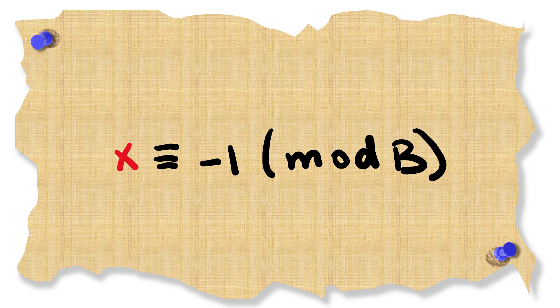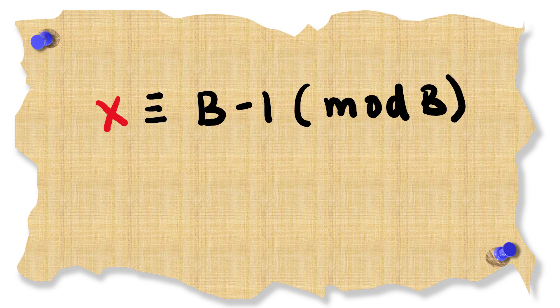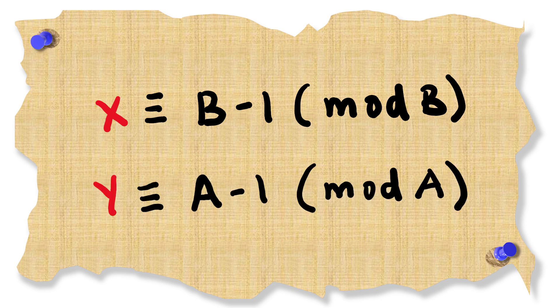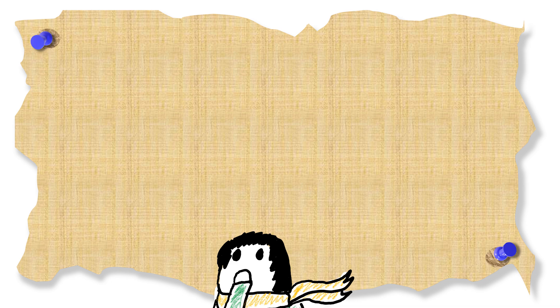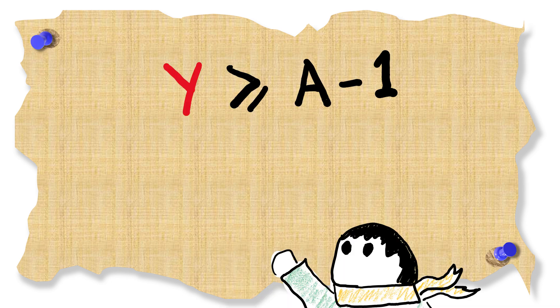Writing this as a remainder we get x is congruent to b minus 1 modulo b. Doing the same process for y gives y is congruent to a minus 1 modulo a. As x and y are both not negative y must be at least a minus 1 and x must be at least b minus 1.